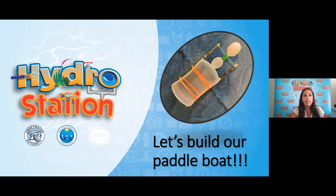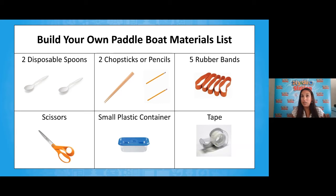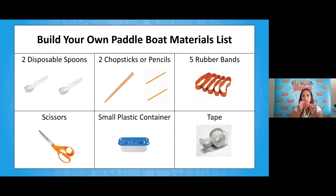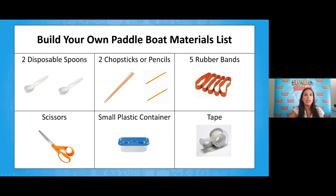It looks like we have a plan ready for action, so it's time to build our paddle boat. Here's what you're going to need: two disposable spoons, chopsticks or long dowels or pencils longer than your container, five rubber bands, a pair of scissors, some tape, and a plastic container for the vessel. If you need to grab any of those materials, feel free to press pause and resume once you have your materials and are ready to build with us.